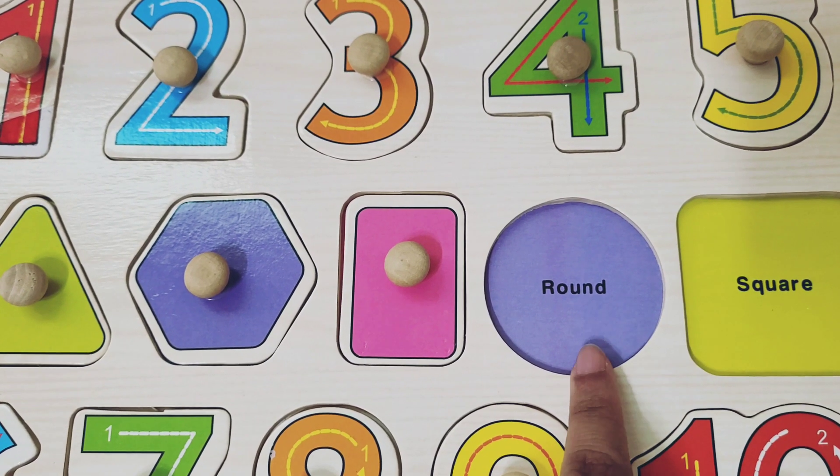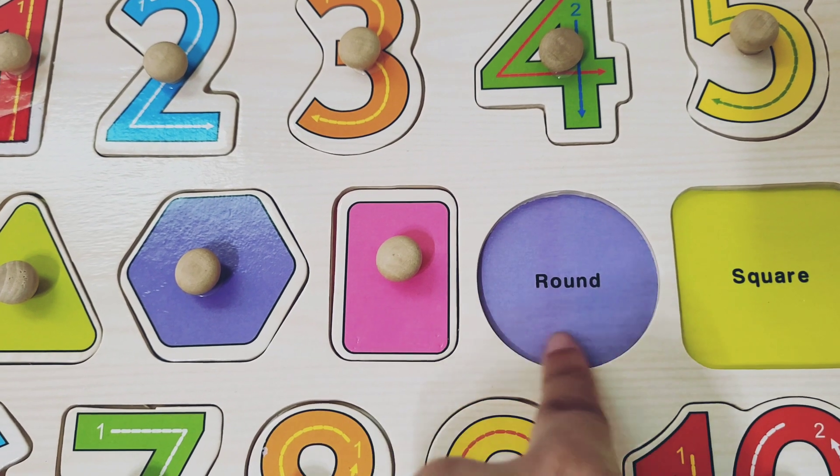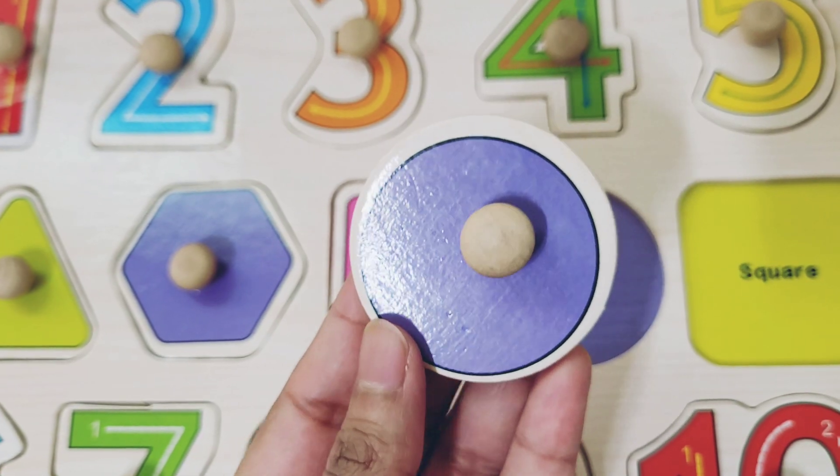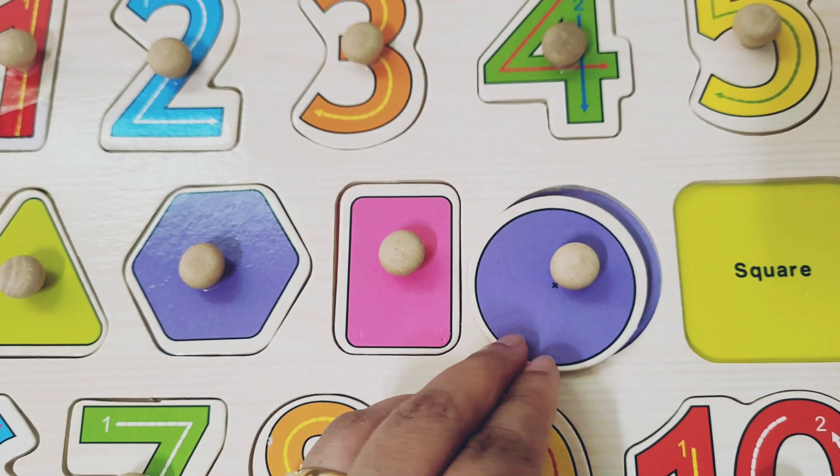And this one is circle. Round and round circle. And this is also purple in color.